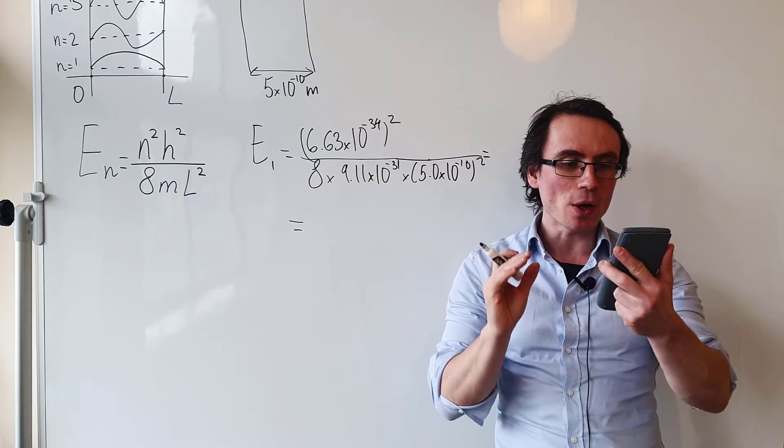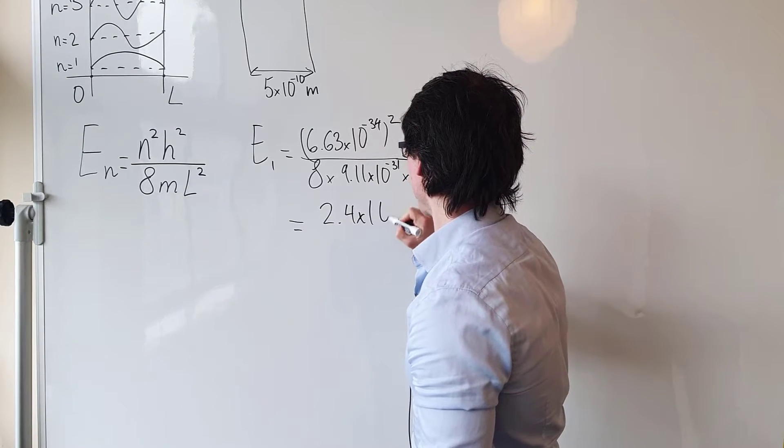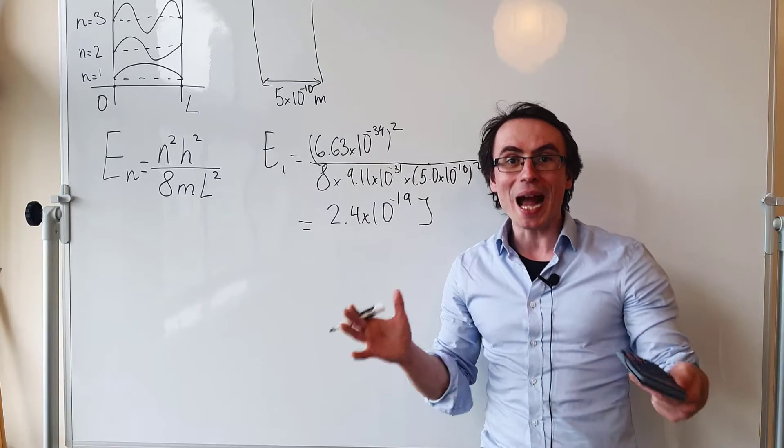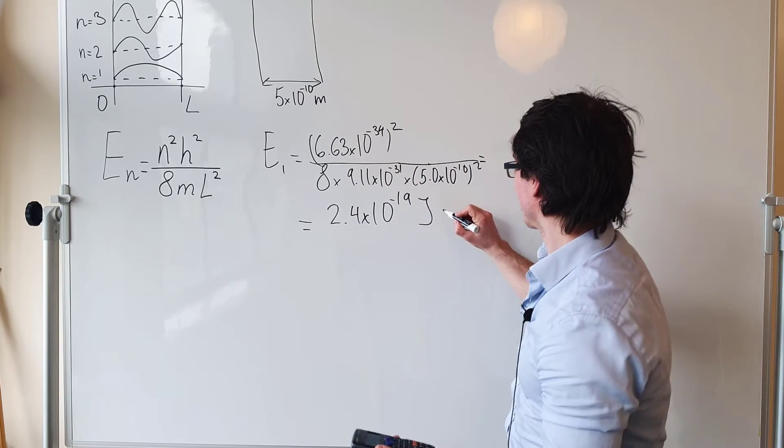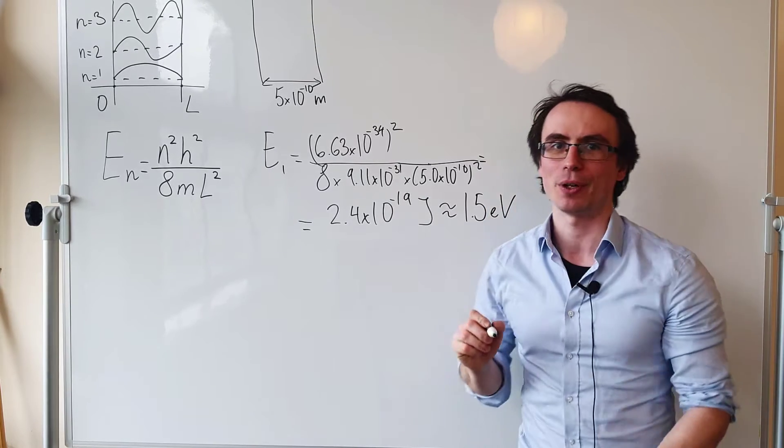Calculating this, we're going to get about 2.4 times 10 to the power of minus 19 joules. If we calculate this in electron volts, we would get around 1.5 electron volts.